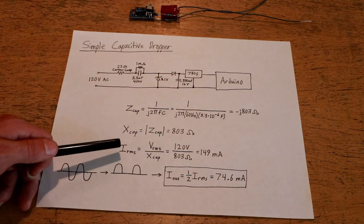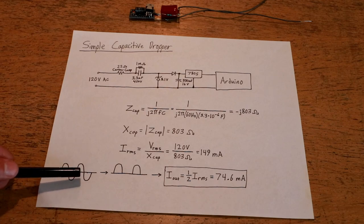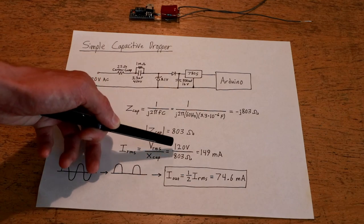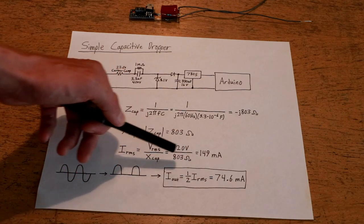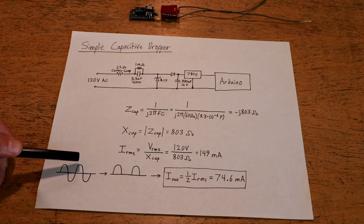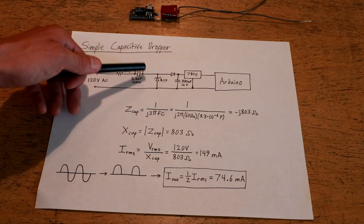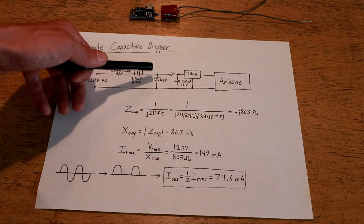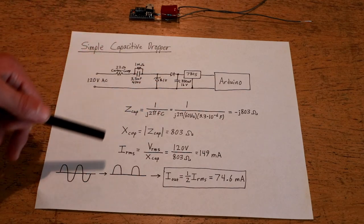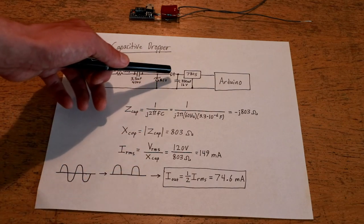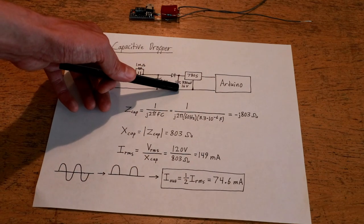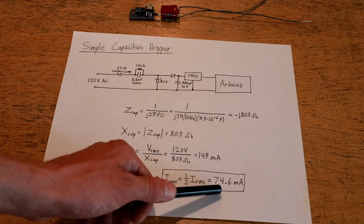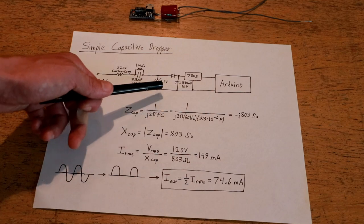To calculate the RMS current that would go through a full bridge rectified capacitive dropper, you simply take the RMS voltage, which is 120 volts, and divide it by the reactance to get the RMS current that will flow through the device. That being said, however, since we've built a very simple capacitive dropper which uses a zener diode across the line as the rectifier, as opposed to a full bridge rectifier, we're only going to see half of the voltage pulses making it through the rectified diode into the capacitor. This cuts our effective average current in half, which then basically leaves us with 74.6 milliamps at the output.